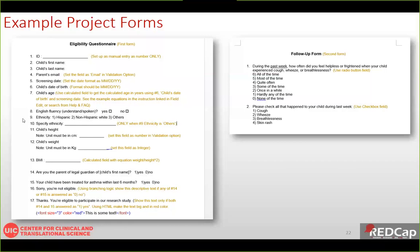Child's height will be a number field in centimeters, and weight in kilograms. BMI will also be an auto-calculated field using the equation: weight divided by height squared (with height converted from centimeters to meters). Two eligibility criteria questions ask: 'Are you a legal guardian of the child?' and 'Has the child been treated for asthma within the last six months?' Both must be answered yes. If either is no, a descriptive text reading 'Sorry, you are not eligible' will display using branching logic.